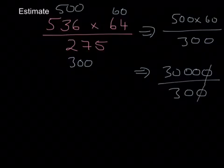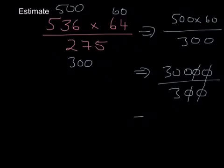Let's sort the zeros out — canceling one, one, one, one — and we're left with 300 divided by 3, which gives us 100.